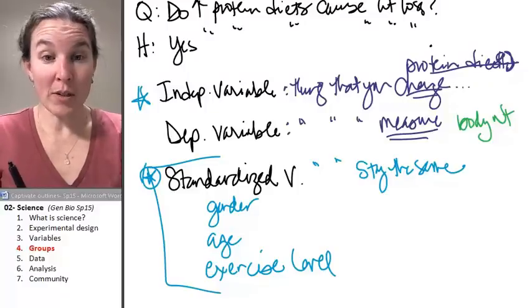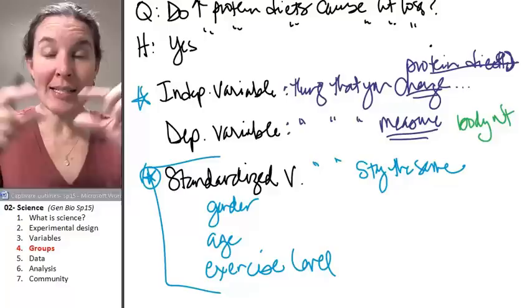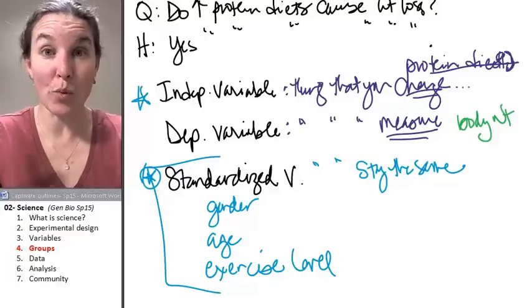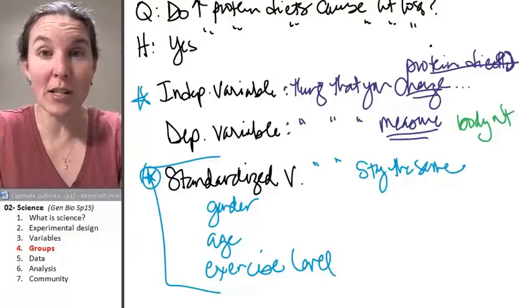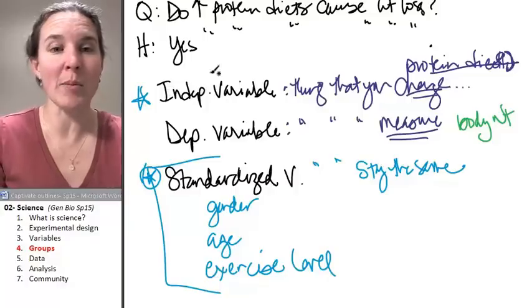Now that we have our variables, now we can identify our experimental groups. We can identify the groups that are going to receive treatments in our experiments.